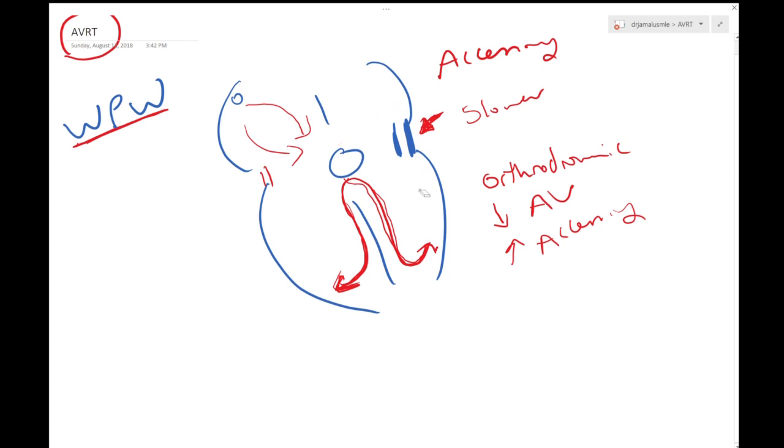And why did I say so? It's because there's another type which is called antidromic. Antidromic is basically if you're going down the accessory pathway but up through the AV node. And how does that happen? Electricity might go through here and then just go back through the AV node and create the cycle.